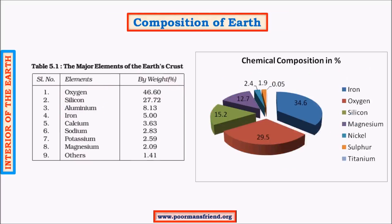For the composition of earth as a whole, iron is the major element, followed by oxygen, then silicon. A useful clue: silicates (silicon + oxygen) are abundant on the earth's surface, so oxygen and silicon dominate the crust. But for earth as a whole, the dense iron-and-nickel-rich core makes iron the most abundant element overall. The significant difference between crust composition and whole-earth composition is that aluminum is significant in the crust, while magnesium is significant for earth as a whole.